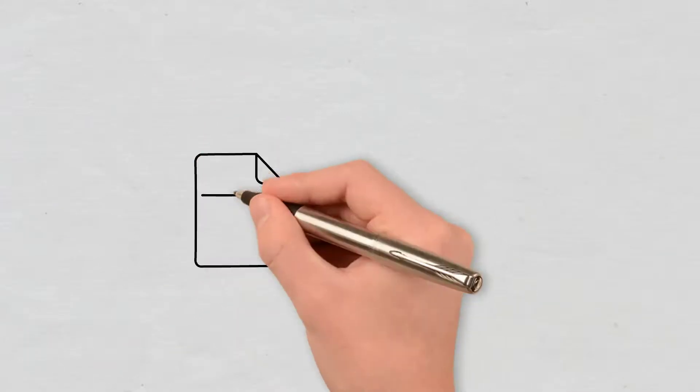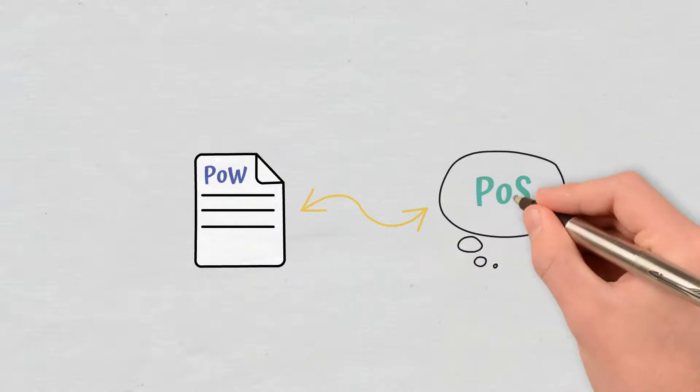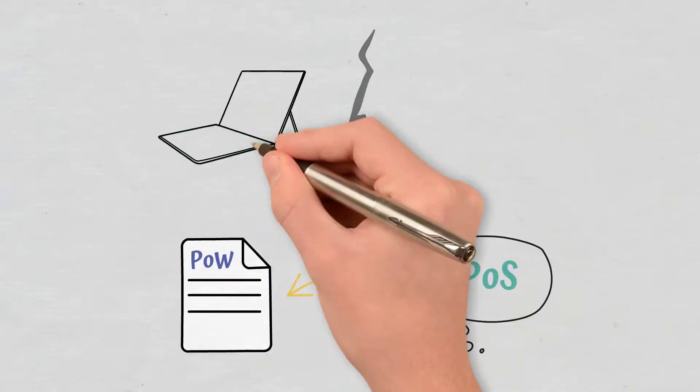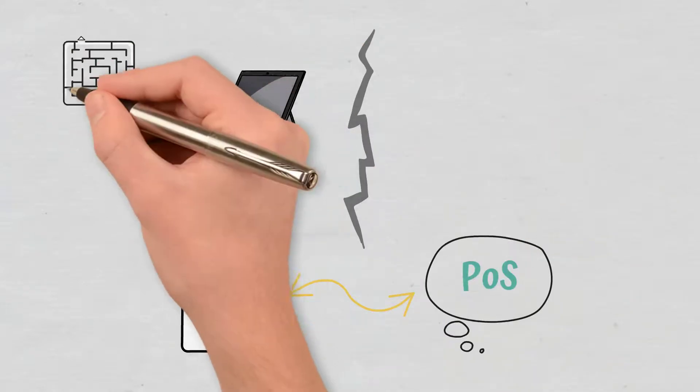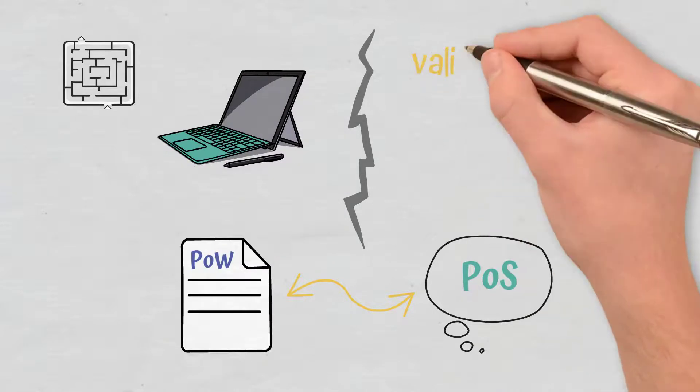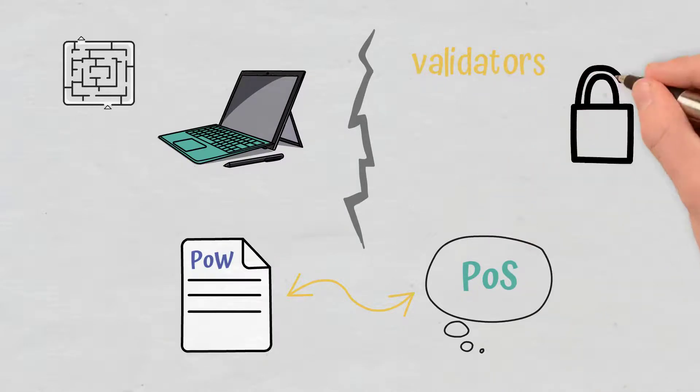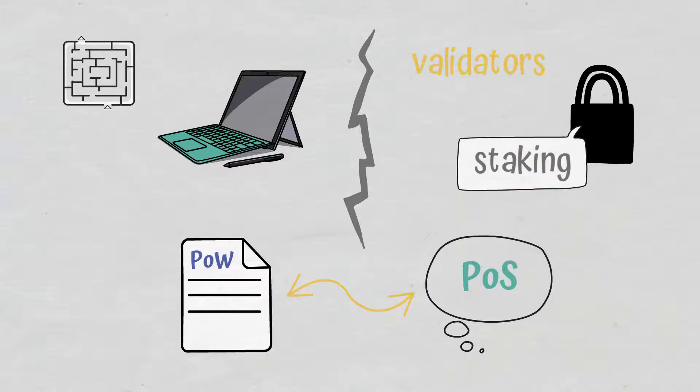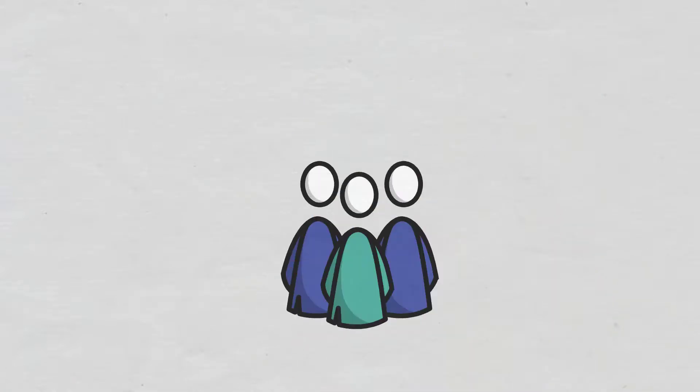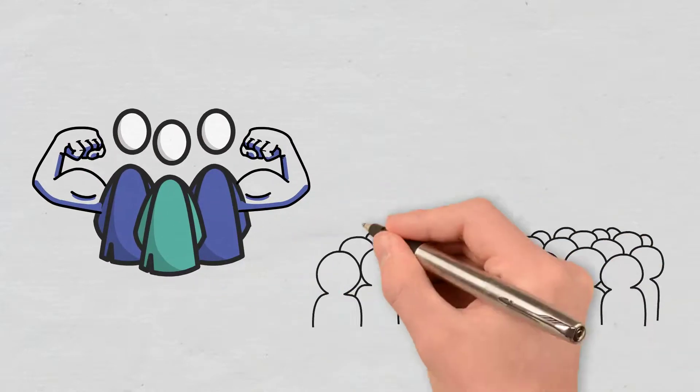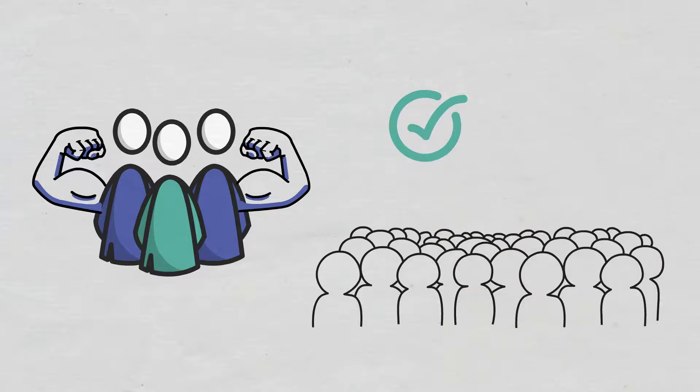This is the most common alternative to Proof of Work. Instead of using hardware and solving cryptographic puzzles, there are validators that invest in cryptocurrencies which are locked in staking. Validators are selected based on their staking power on the network, meaning that everybody can have the chance of validating transactions and receiving rewards for it.